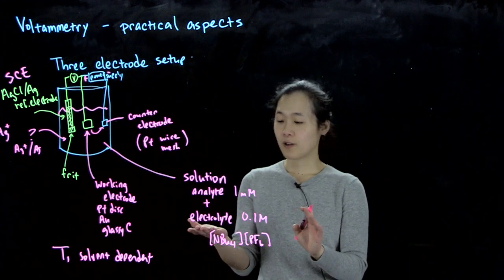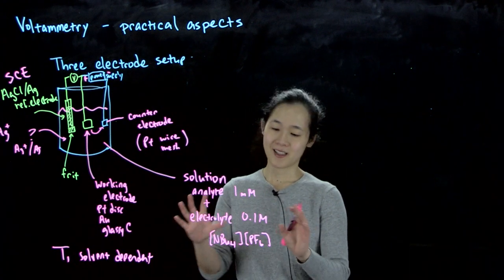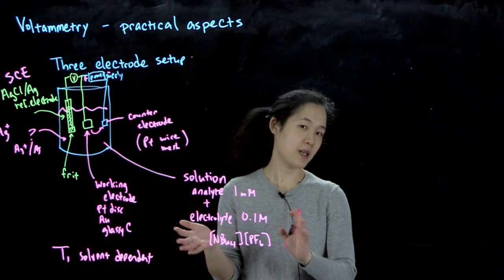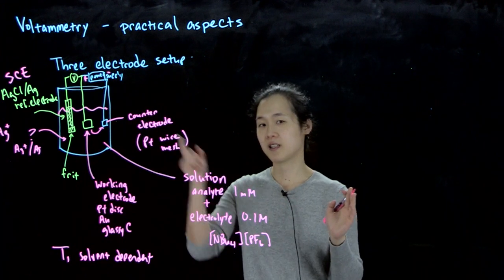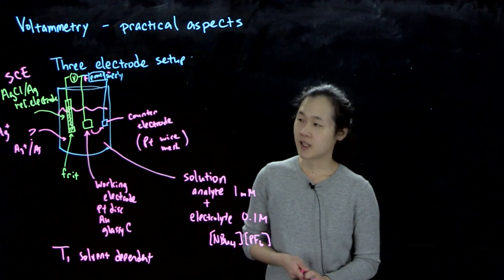When I learned electrochemistry, I was told this electrolyte, this conductiveness, is why you shouldn't pee on an electric fence. It's going to conduct electricity back to you, and then you'll be unhappy.